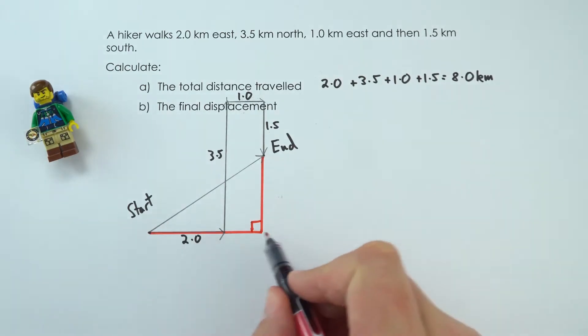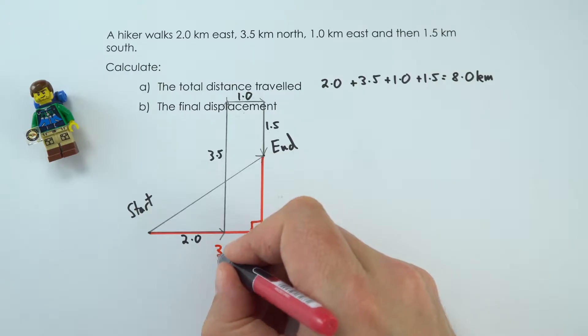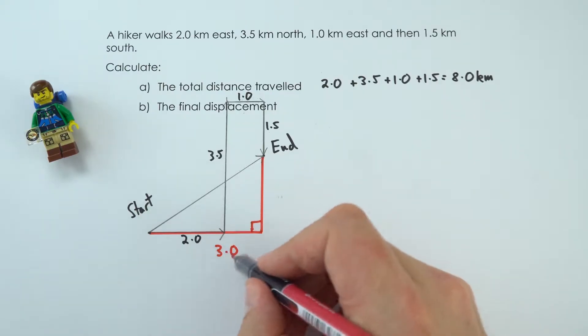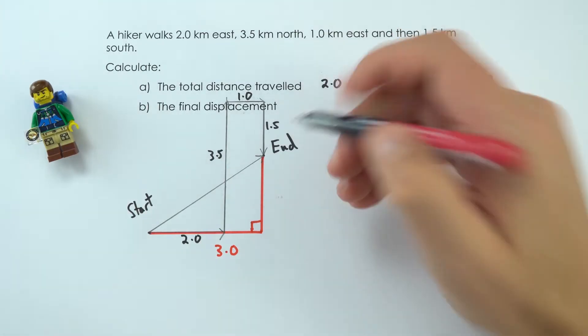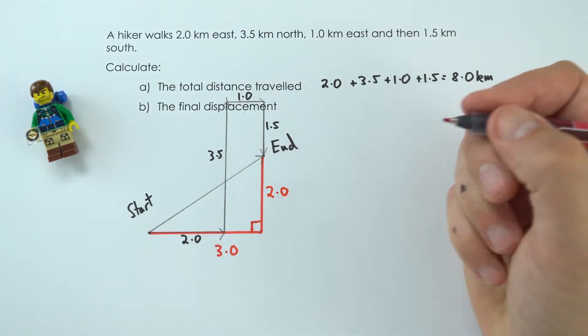If that's two kilometers and that's one kilometer, then the total length of that bottom side is going to be three kilometers. And if we go up three and a half and come back down 1.5, then this is going to be equal to 2.0.